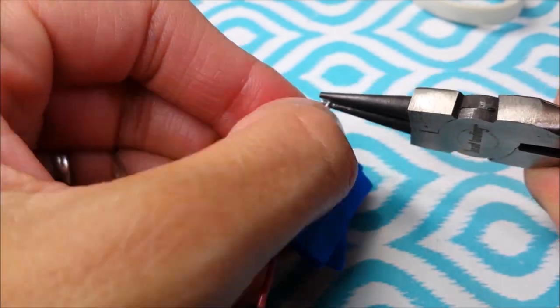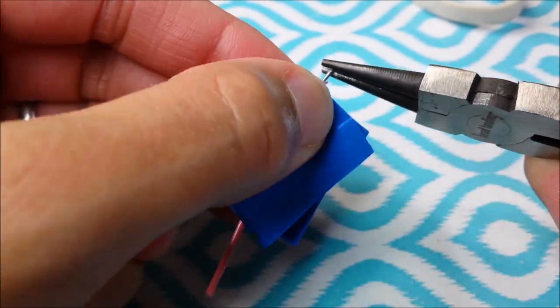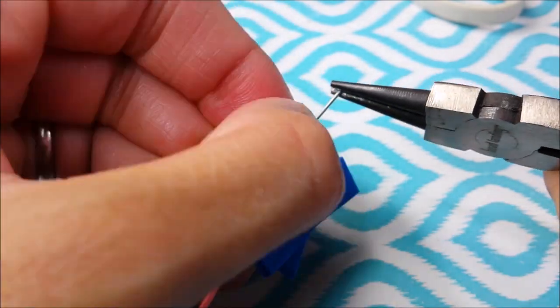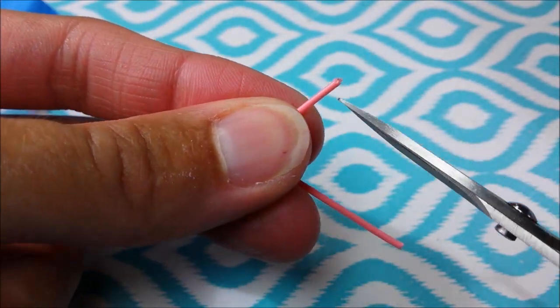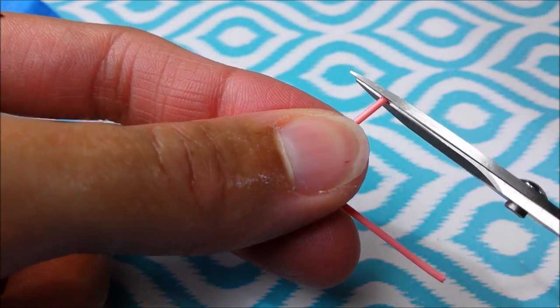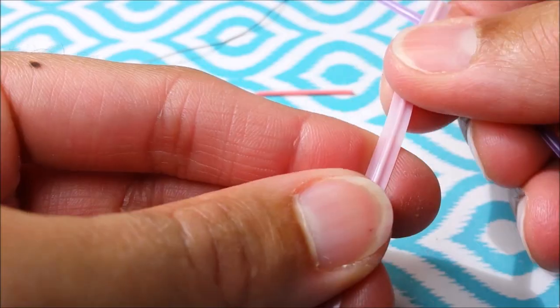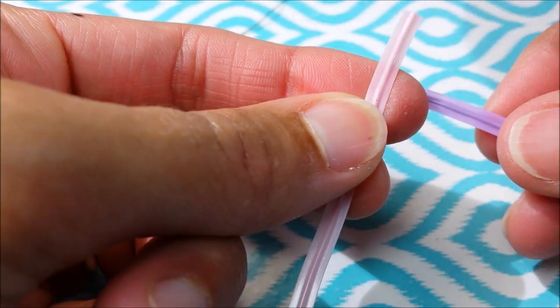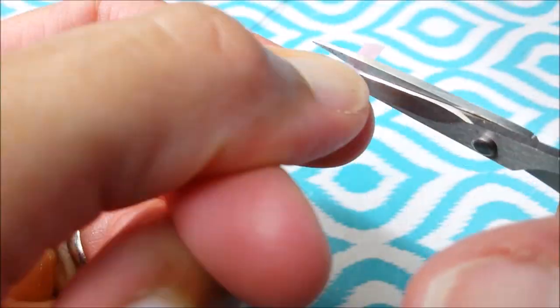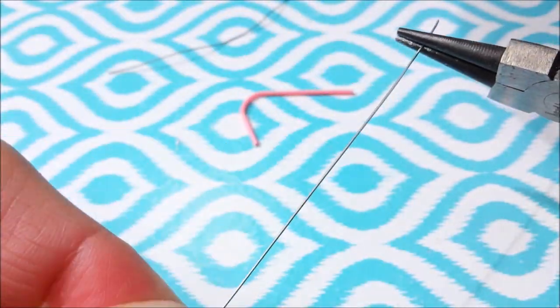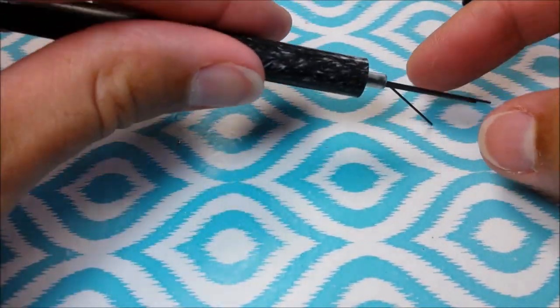As always, trim any ugliness. Then take a thin piece of wire. If you don't have wire lying around but you have these little twist ties, you can pull the wire out the exact same way that we just did.